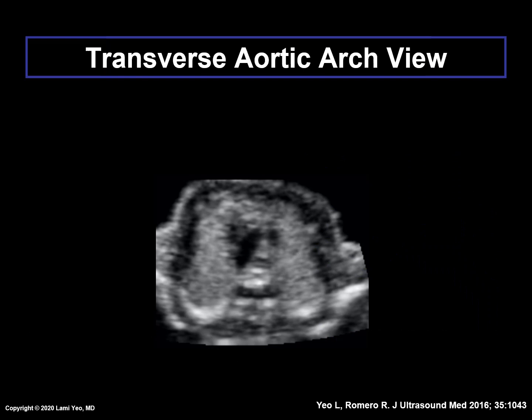In the transverse aortic arch view, two vessels are seen. The transverse aortic arch, or what we call the dolphin, has an oblique course which crosses the midline from the right anterior to the left posterior chest. The superior vena cava is visualized to the right of the aortic arch.